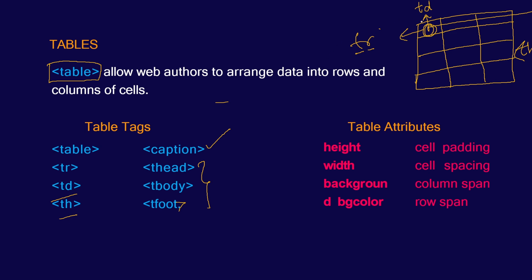To arrange your table data so it doesn't get cluttered, you use thead, tbody, and tfoot. Inside thead you give the th data; inside tbody you create your table rows and table data; and tfoot can also have tr and td tags. There are certain attributes as well — you can specify height, width, background image, and background color for your table. We'll see four more attributes shortly. Let's look at all these tags and attributes in Visual Studio.